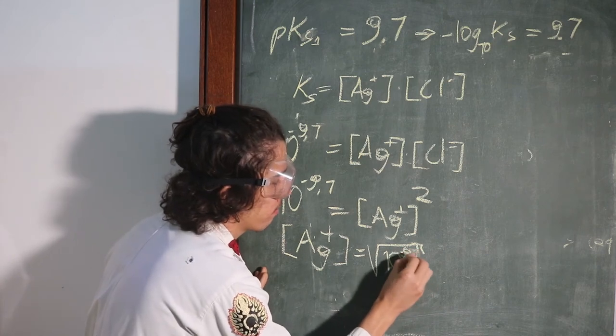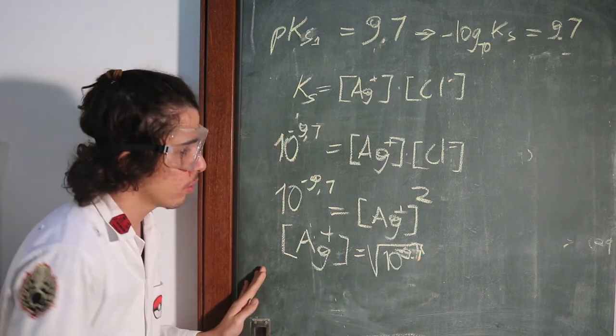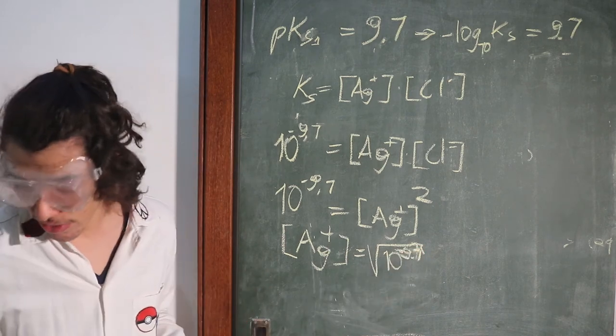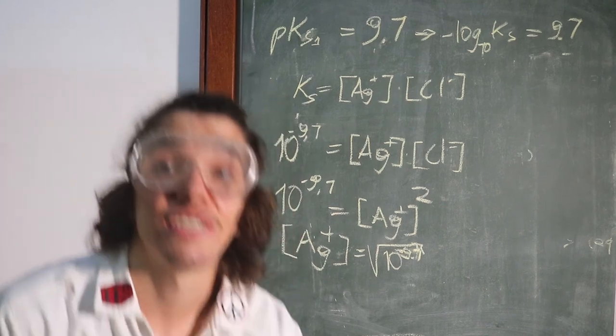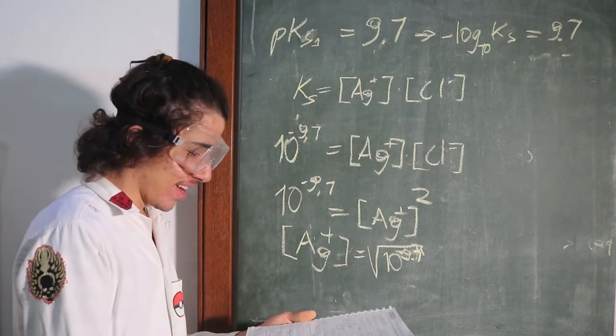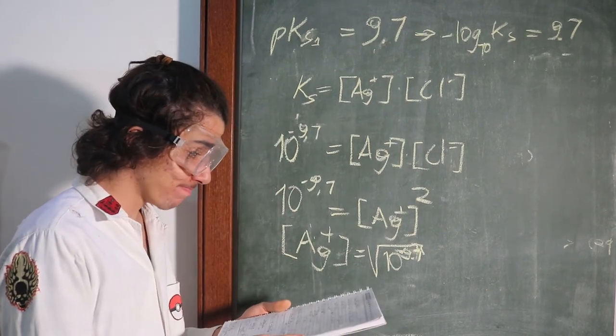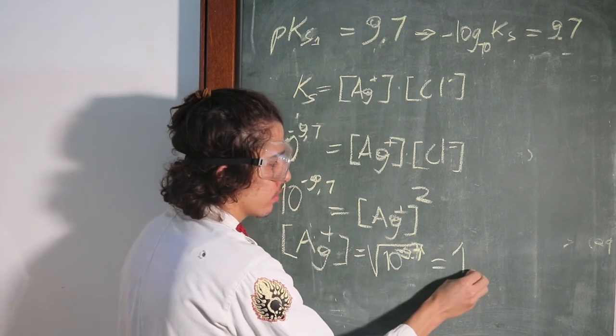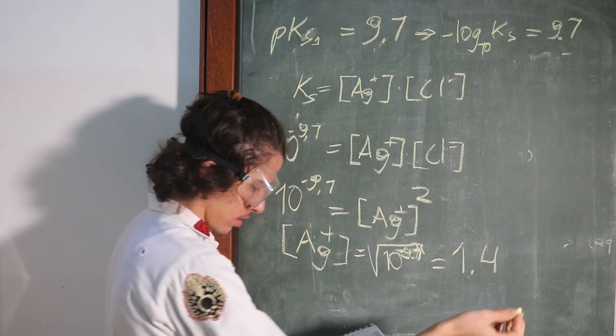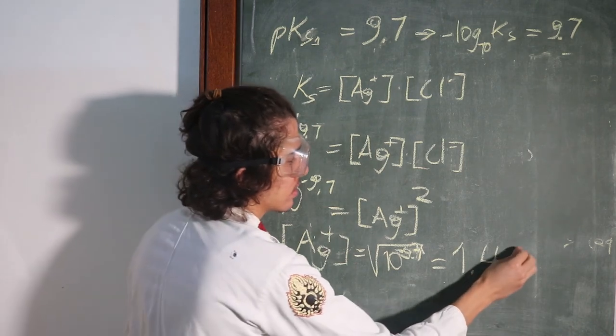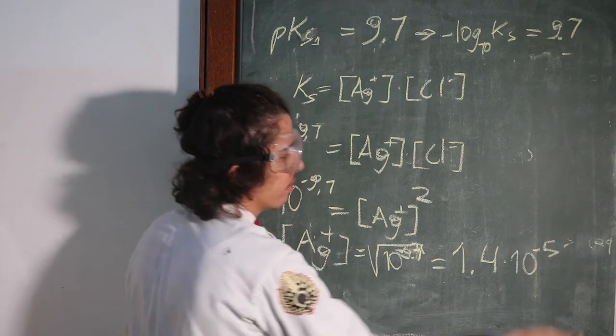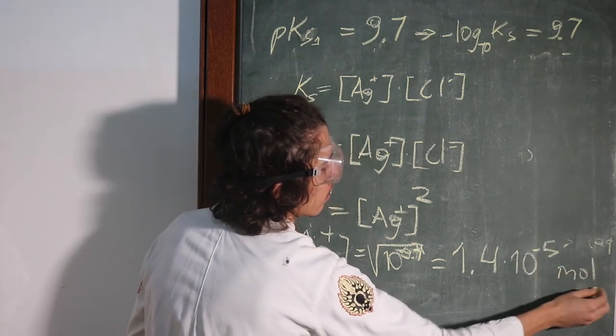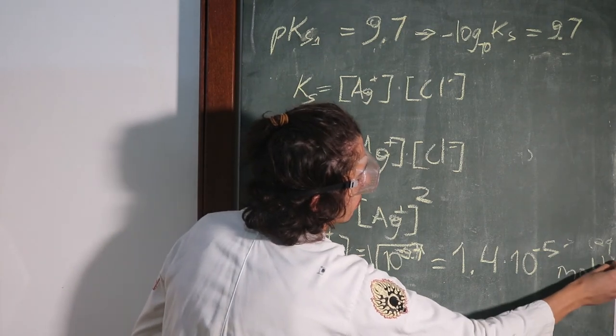Right? Or better here. So the answer to this you can do on your standard scientific calculator. And it's going to be 1.4 times 10 to the power of minus 5 mole liter minus 1.